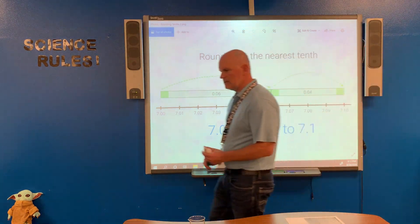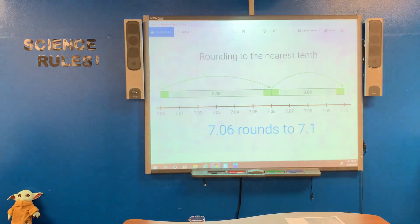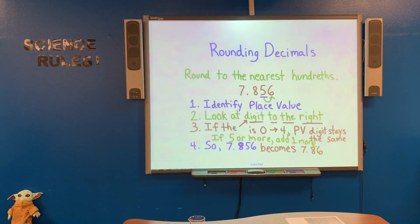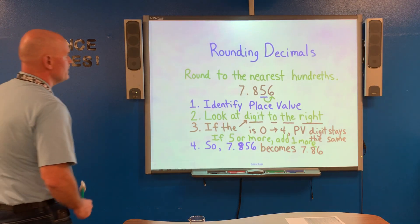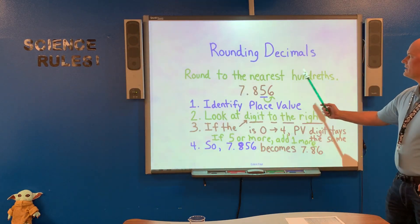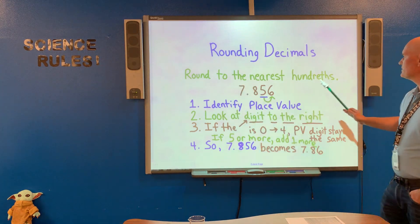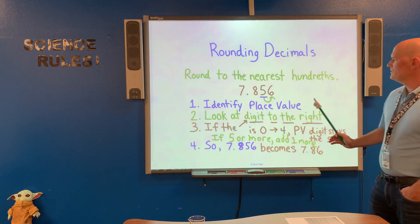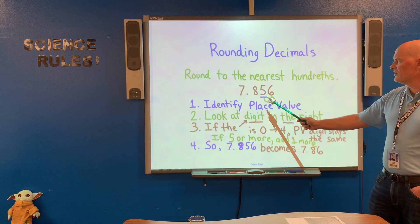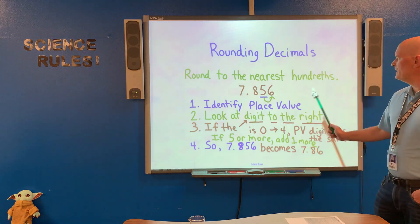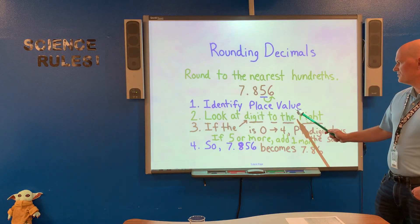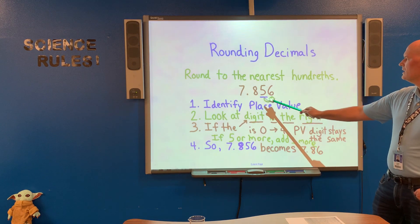Now we're going to take a look at a different strategy, if the number line seems a little confusing to you. Here is another method for rounding decimals. In this example, we're going to round to the nearest hundredths place. This number is seven and eight hundred fifty-six thousandths, and we need to round to the hundredths.